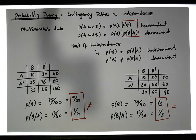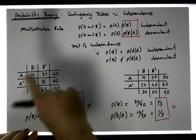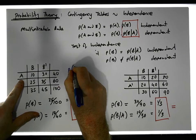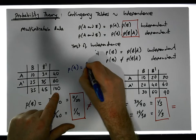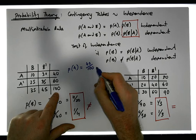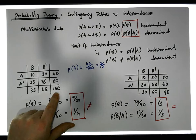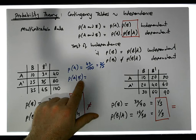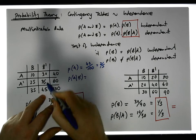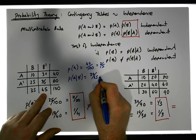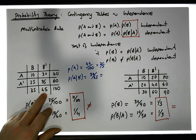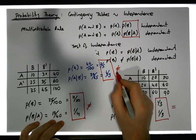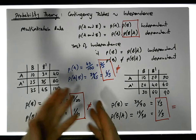Let's do another example. We can calculate the probability of A — well, there are 40 chances out of 100, so P(A) = 40/100 = 2/5. Now let's calculate the probability of A knowing that B prime has happened. B prime means we're in this particular column here. There are 30 chances out of 65, so P(A|B') = 30/65 = 6/13. You can see that these two probabilities are not equal to each other, which means A and B prime are dependent on each other.